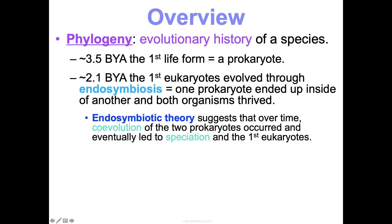You might wonder how a prokaryote could end up inside of another. For instance, one could have been like a parasite and the other a host, but then they ended up both thriving. Or it could just be phagocytosis, where one basically ate the other, but it stayed alive inside and they thrived. There's a lot of evidence for this theory, specifically when we look at organelles like mitochondria and chloroplasts — they divide and replicate in a way really similar to how bacteria do. Mitochondria have their own circular DNA like bacteria, their genes look similar to prokaryotes, and they have double membranes like prokaryotes.